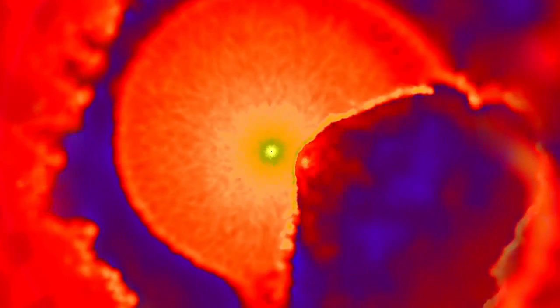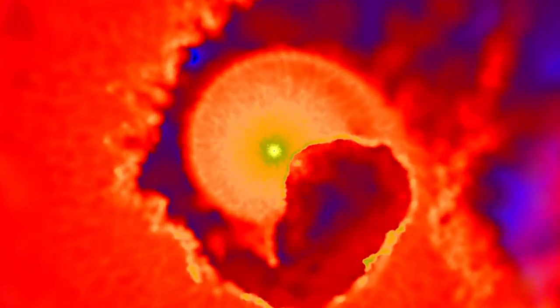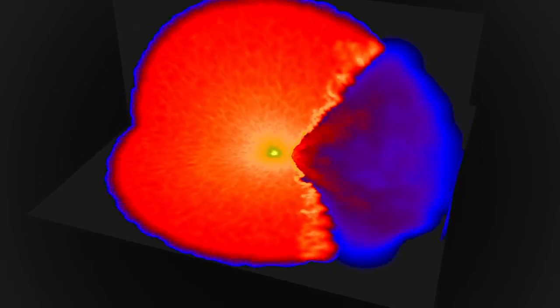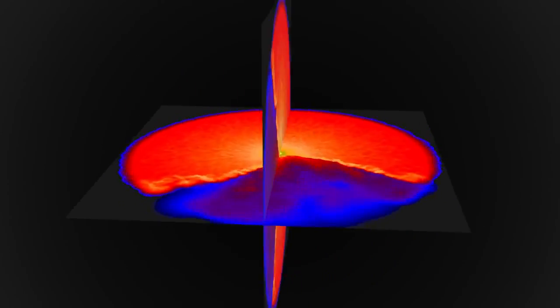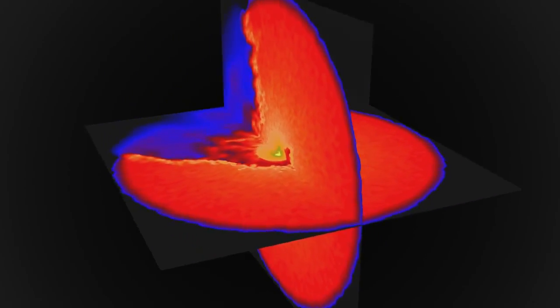But near periastron, the secondary whips around the larger star, carving a tunnel through the primary's dense wind. The secondary star's rapid motion changes the collision zone from head to tail. The smaller star's faster wind flows out along the cavity it created, and then crashes into the outward-moving wind of its companion. From our perspective on Earth, the X-rays fade, then recover as the stars move apart.